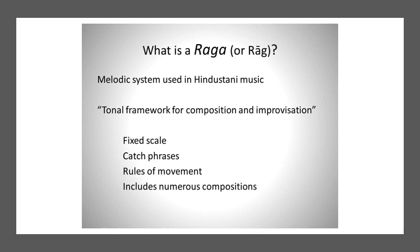A raga is not one composition — it's a tonal framework, and inside one raga you can have many thousands of compositions. Performers — vocalists, sitarists, flute players — typically create their own compositions. All these compositions are orally transmitted; there's no written music system in Indian music. Performers create compositions and pass them down through their family, from teacher to student or father to son, making up a lineage of music.